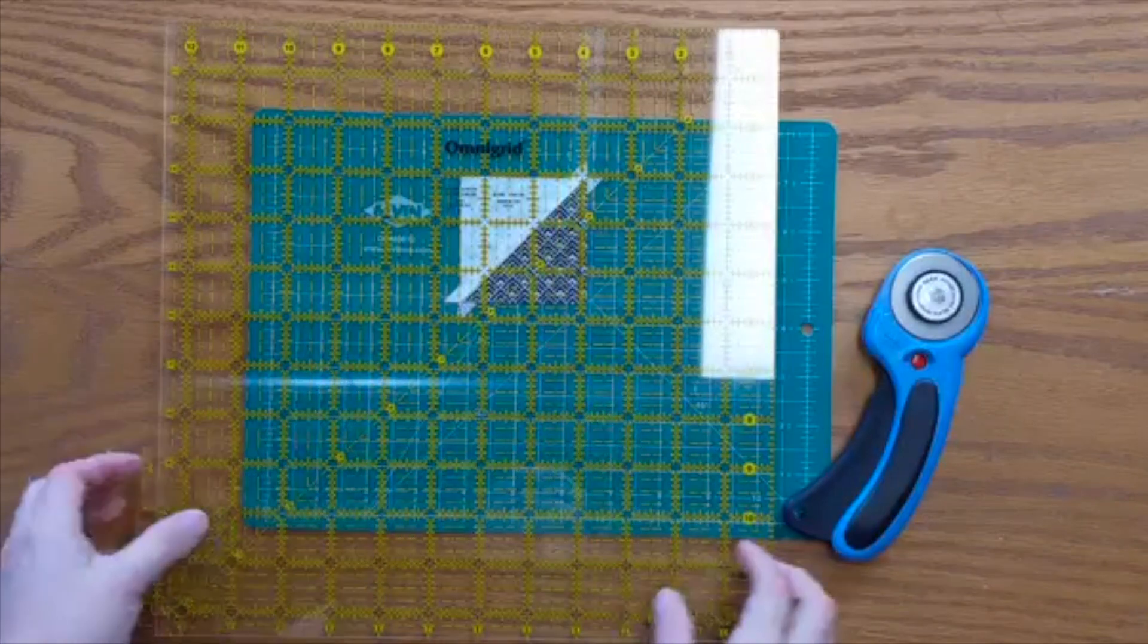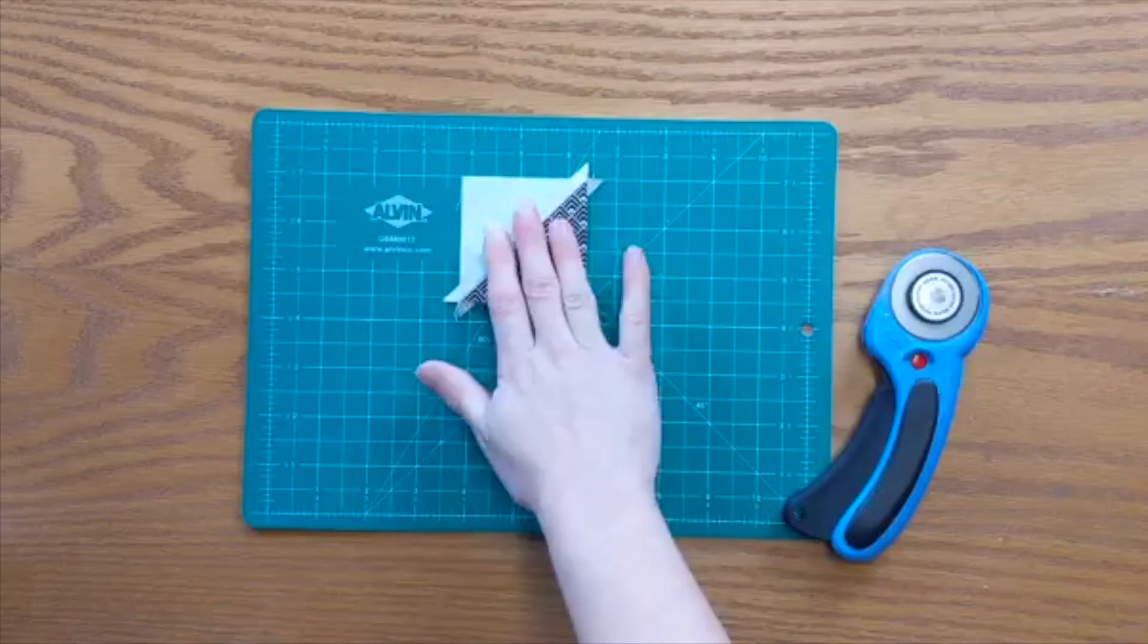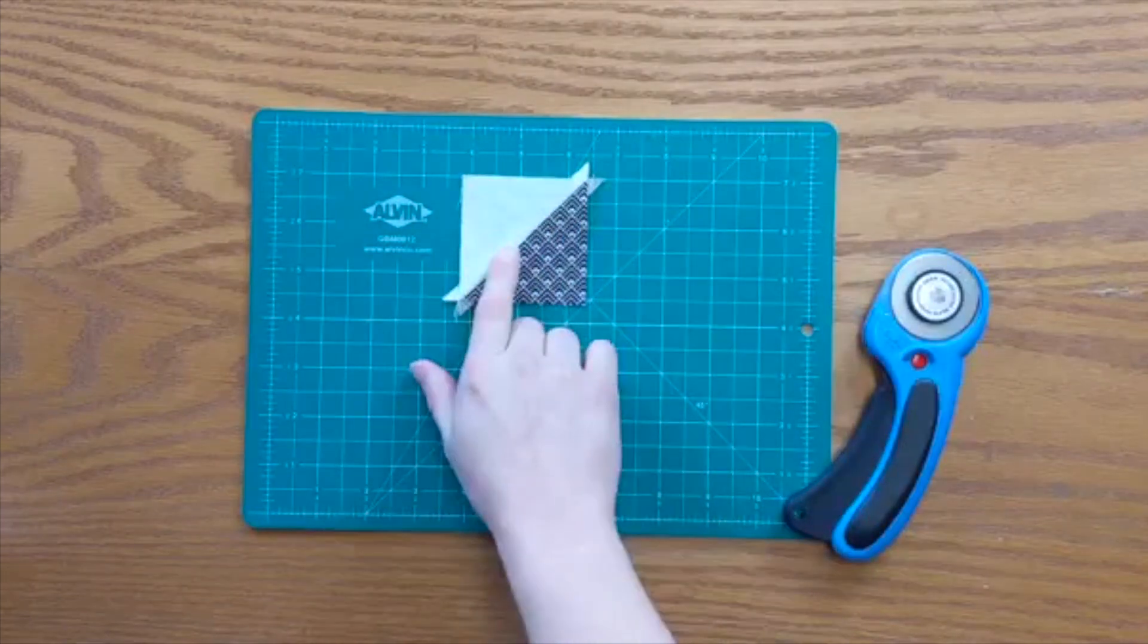I'm going to show you with this one and we're going to get started. I have made my half square triangle and I have pressed it open. I am showing the diagonal going this way.